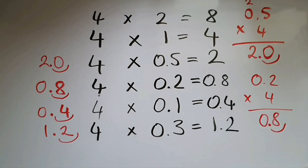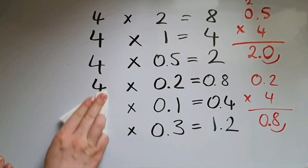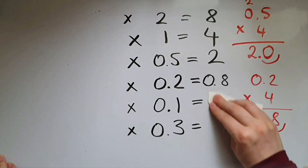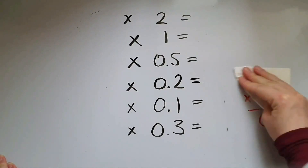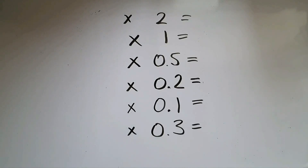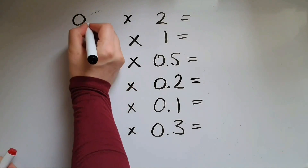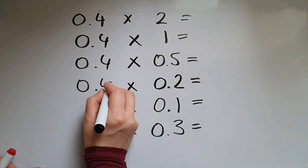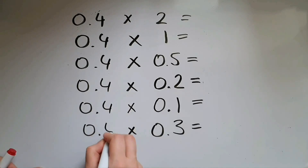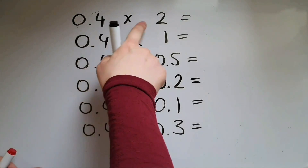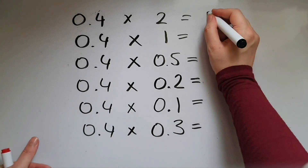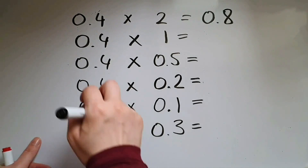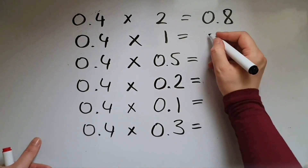So hopefully you get the idea of what it means to multiply a decimal by a whole number. Now we're going to do decimal by decimal. So 0.4 times 2 is doubling 0.4, which gives us 0.8. And 0.4 times 1 gives us the number itself, which is 0.4.